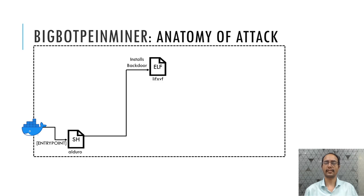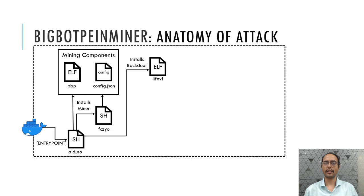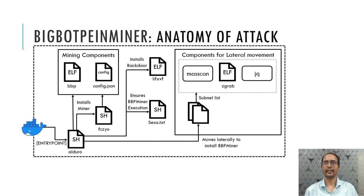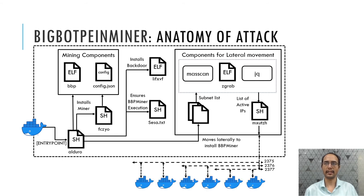The first component it downloads is a backdoor which connects to the attacker's C2 server and allows the attacker to control execution of BigBotPen Miner. Next it downloads mining components and executes them to initiate mining in the victim container. Another component ensures the miners execute in an uninterrupted way. Once installation is completed in a single container, it moves laterally to infect other containers by downloading a set of files and additional components, including masking tools. It prepares a list of IP addresses where Docker daemon ports are publicly exposed and deploys the BigBotPen Miner aldoro script inside those containers.